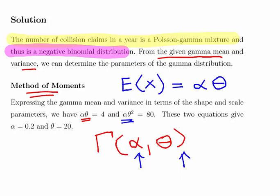So you can very quickly deduce that theta must equals 20. Just divide the variance by the mean and that will give you theta. And that, therefore, would mean by the process of elimination that alpha equals 0.2.